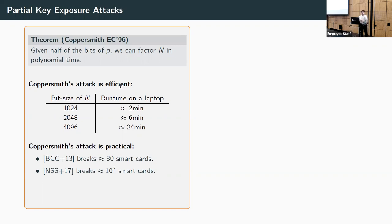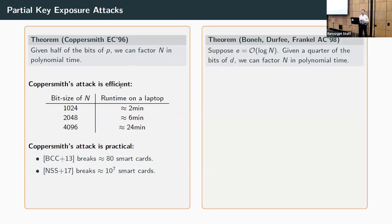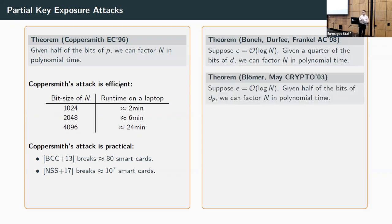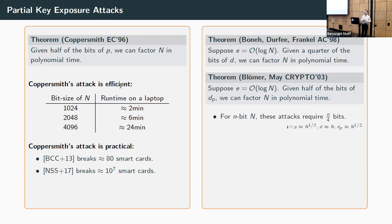This is a really important result for RSA cryptanalysis, and it leads to a natural question: can we do similar attacks knowing bits of the secret exponent or CRT exponents instead of bits of p? There has been lots of research on this, called partial key exposure attacks. For instance, Boneh, Durfee, and Frankel from Asiacrypt '98 show that if e is reasonably small, you can break RSA with only a quarter of the bits of d. For CRT-RSA, you can factor with half the bits of one CRT exponent. Notably, all these attacks require roughly n/4 bits.